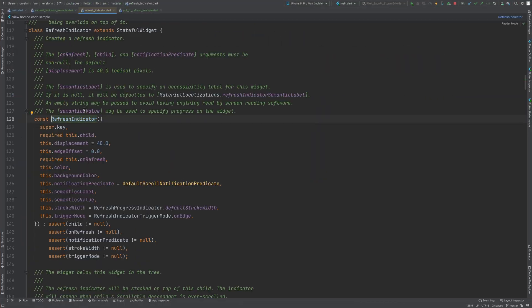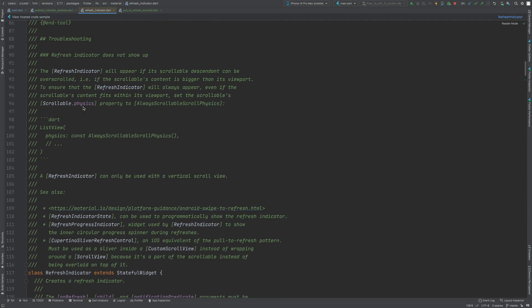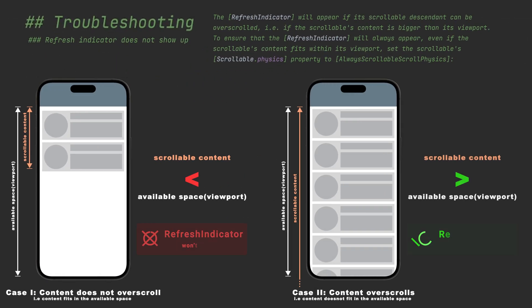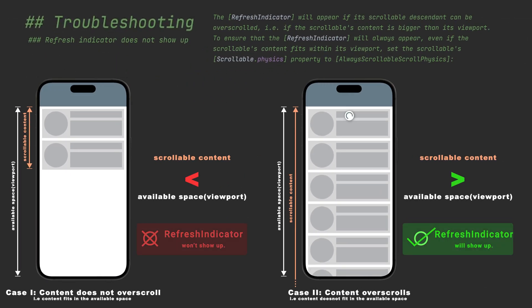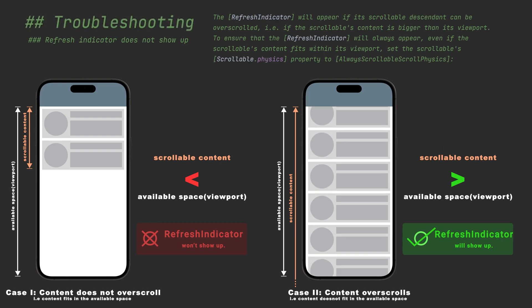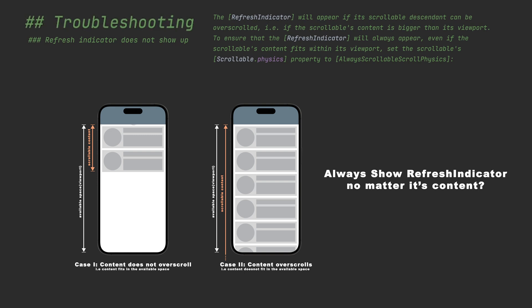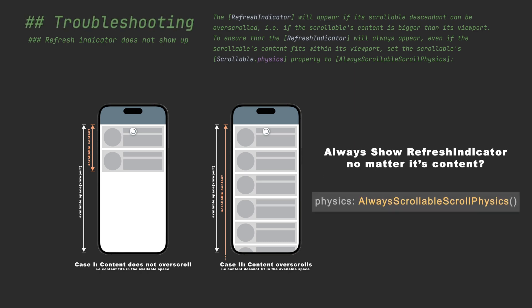In the documentation there is a common troubleshooting problem that developers often face: the refresh indicator does not show up. It states that the refresh indicator will appear if its scrollable descendant can be overscrolled — that is, if the scrollable's content is bigger than its viewport. To ensure the refresh indicator always appears, even if the content fits within its viewport, set the scrollable's physics property to AlwaysScrollableScrollPhysics.